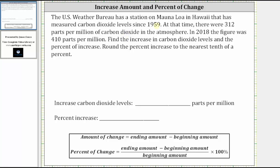The US Weather Bureau has a station in Mauna Loa in Hawaii that has measured carbon dioxide levels since 1959. At that time, there were 312 parts per million of carbon dioxide in the atmosphere. In 2018, the figure was 410 parts per million.